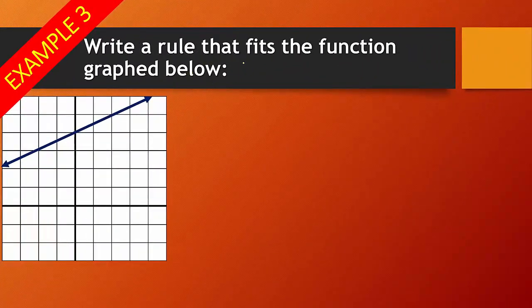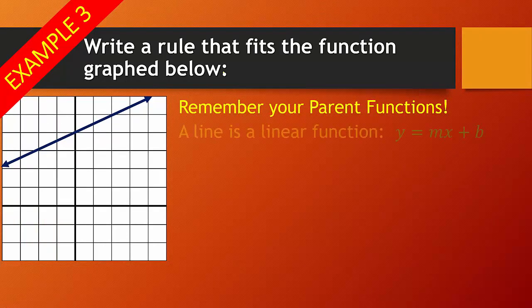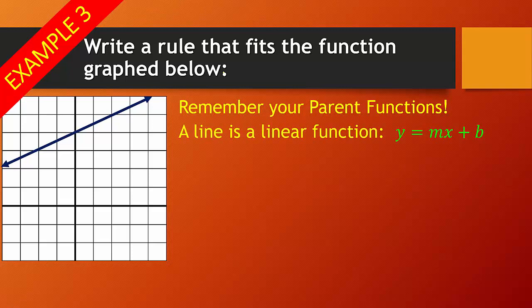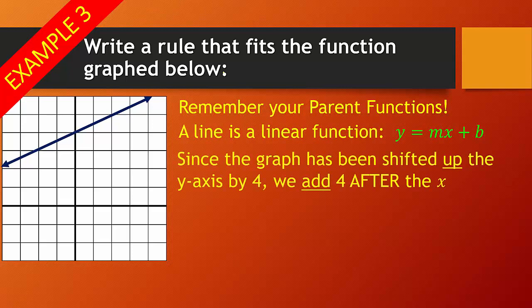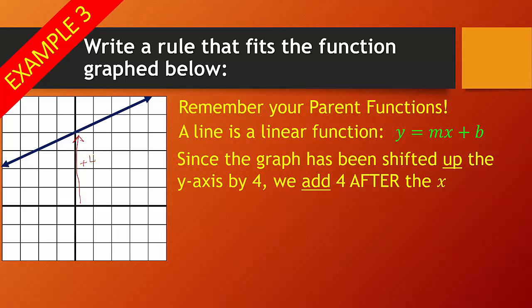Now, if we had to write a rule that fits the function below, again, remember your parent functions. This is a nice line, so it's a linear function, which is in the form y equals mx plus b or f(x). Since the graph has been shifted up, so just like with the other one, it's been shifted up, so that's going to be a plus 4. It's been shifted up 4. We add that after the x, and then now we've got this part right here, the m that we need to figure out, because that's not just going up 1 over 1 anymore.